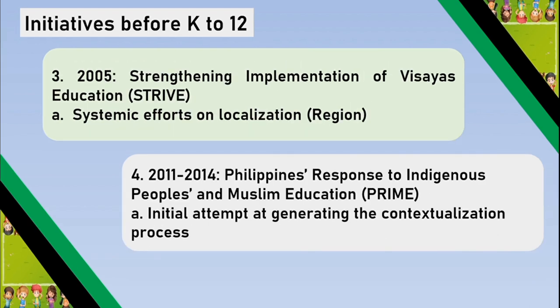Number 3, in 2005, was the strengthening of the implementation of Visayas education. The goal of the government here was to improve localization in the Visayas region. A systematic effort on localization refers to organized and deliberate steps or strategies to address the specific needs of a particular region.